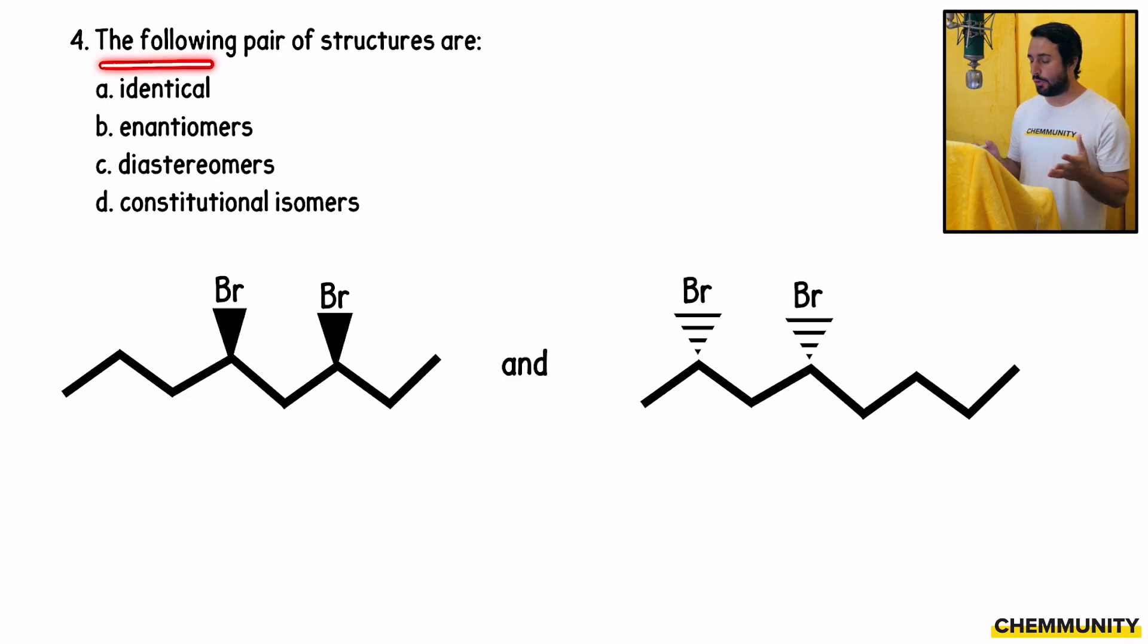Four asks, the following pair of structures are identical, enantiomers, diastereomers, and constitutional isomers. So we have some straight chain alkanes with bromo groups on them, and why don't we go ahead and number these parent chains. So on the left, which direction would we number this? We would start from the right, and we would get 1, 2, 3, 4, 5, 6, 7, 8. So that is an octane.